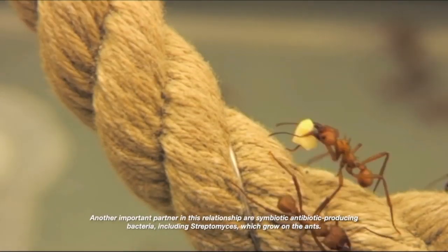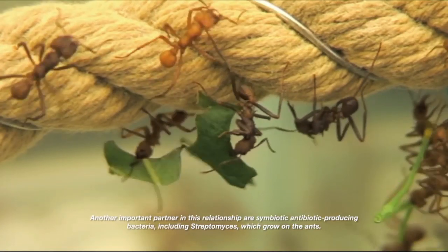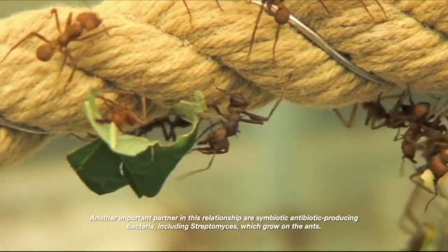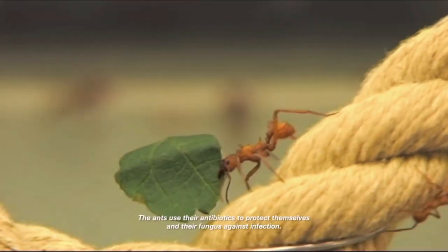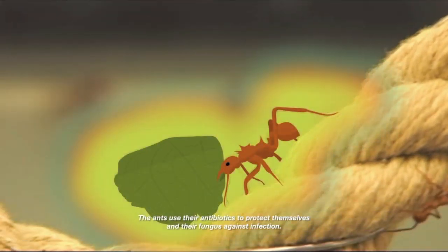Another important partner in this relationship are symbiotic, antibiotic-producing bacteria, including streptomyces, which grow on the ants. The ants use their antibiotics to protect themselves and their fungus against infection.